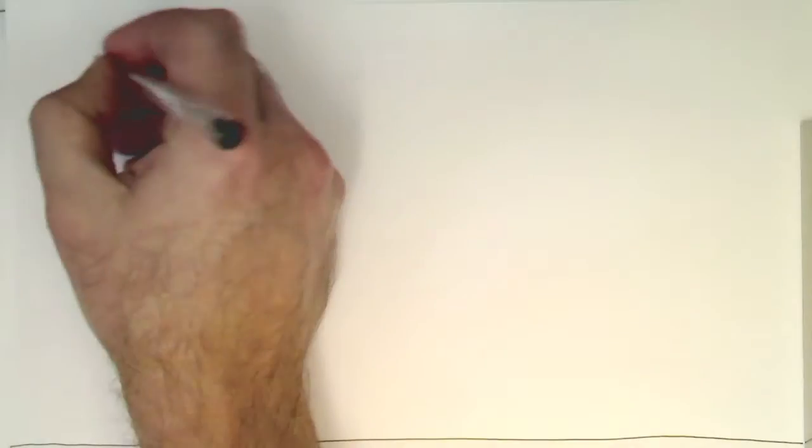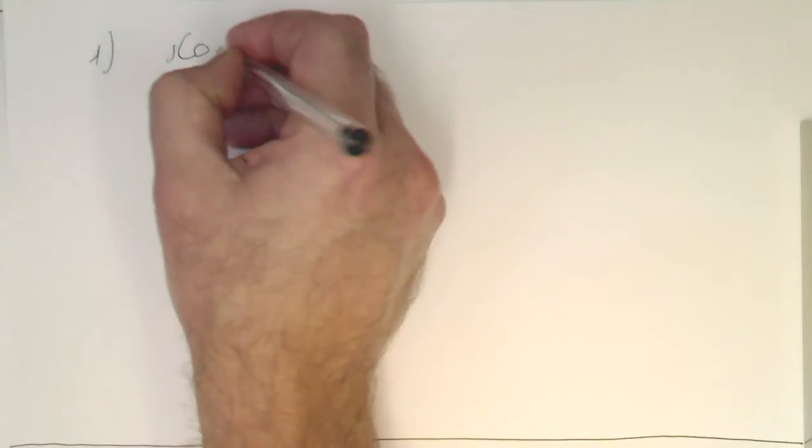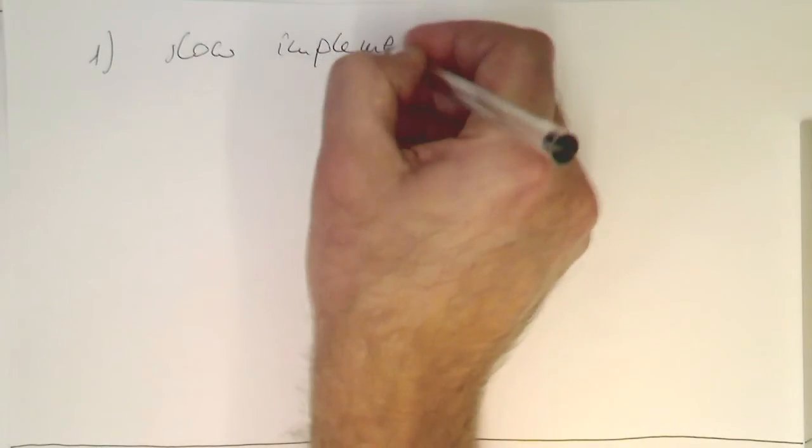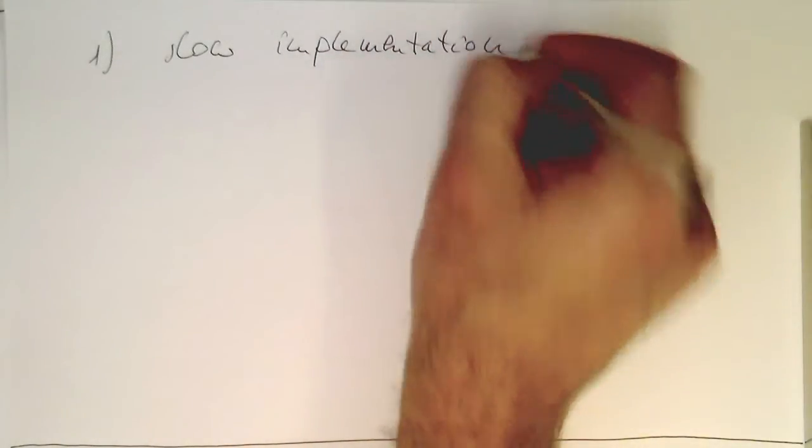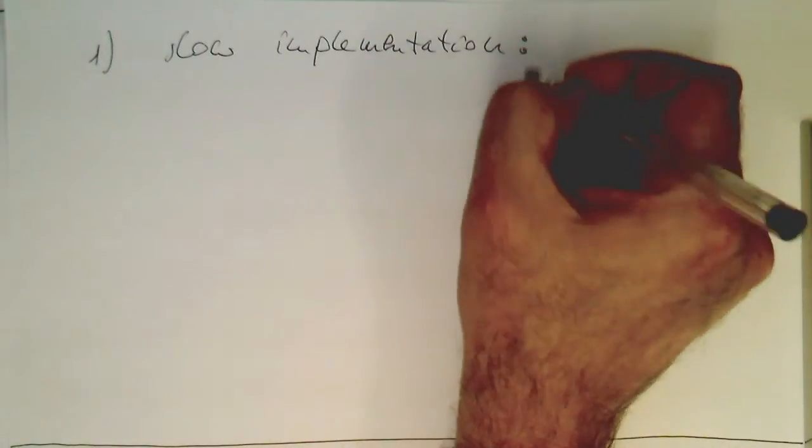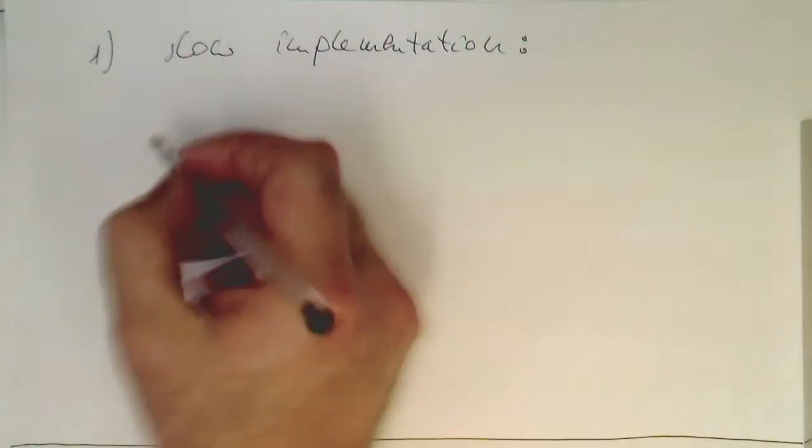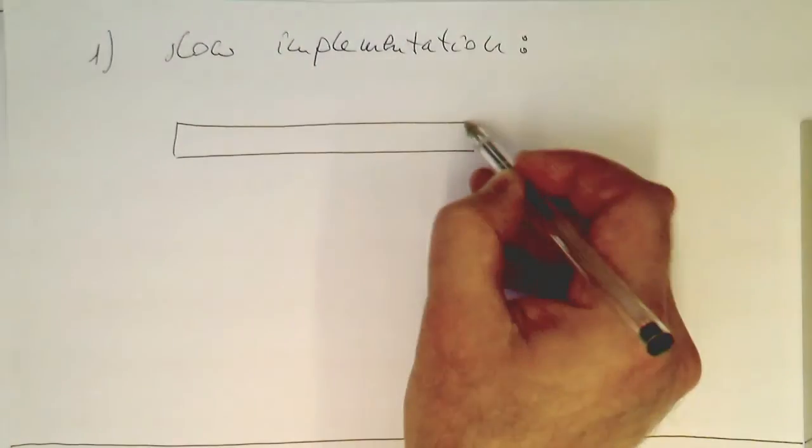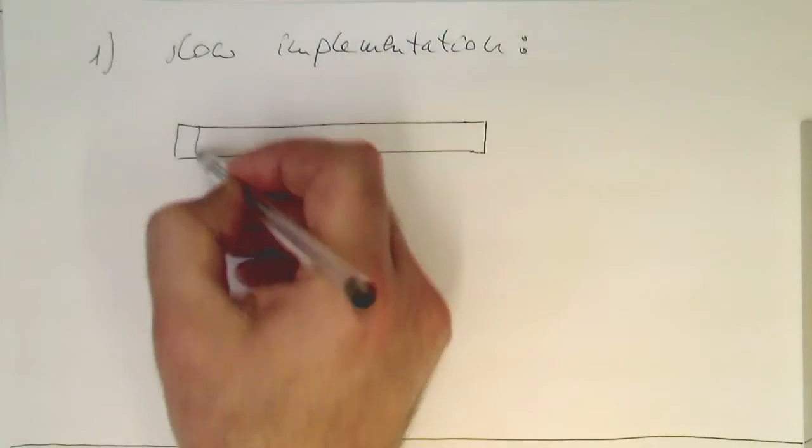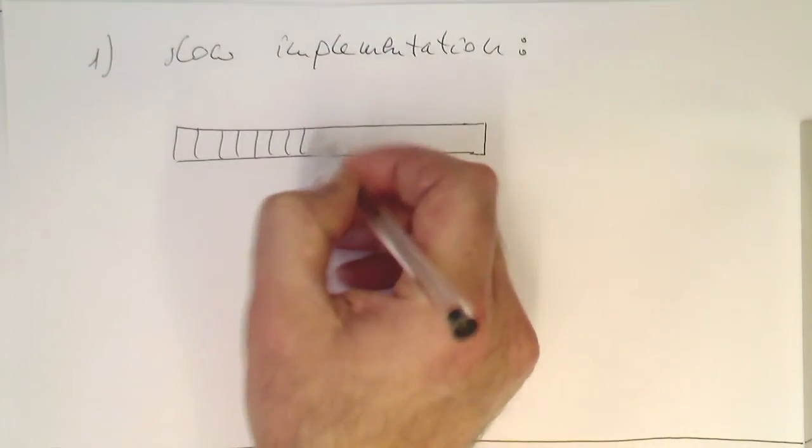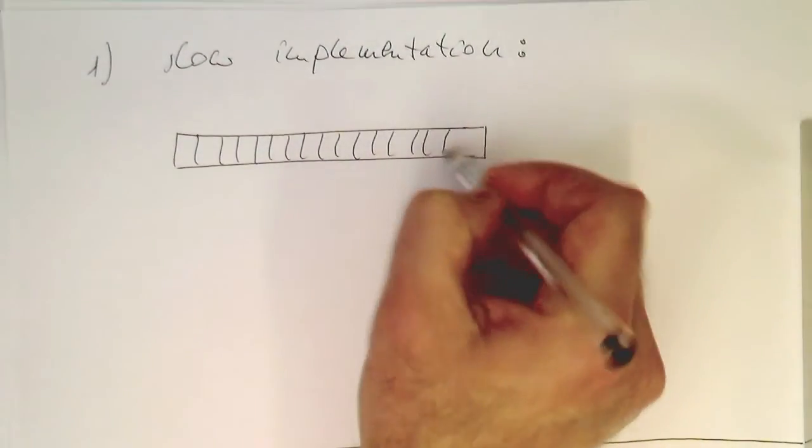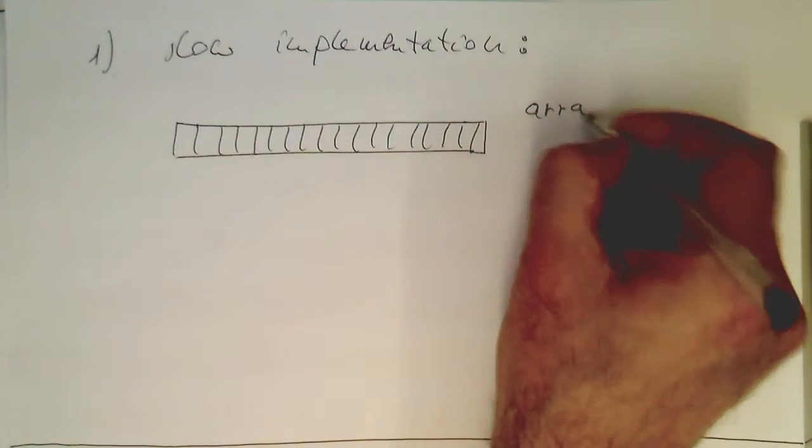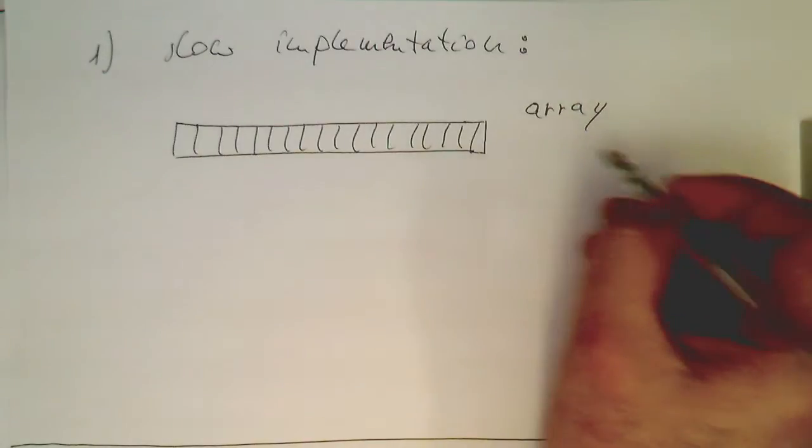So the first is the slow implementation. Let's just imagine we have just a couple of memory places here, just an array. So that's our array, which acts as a delay line.